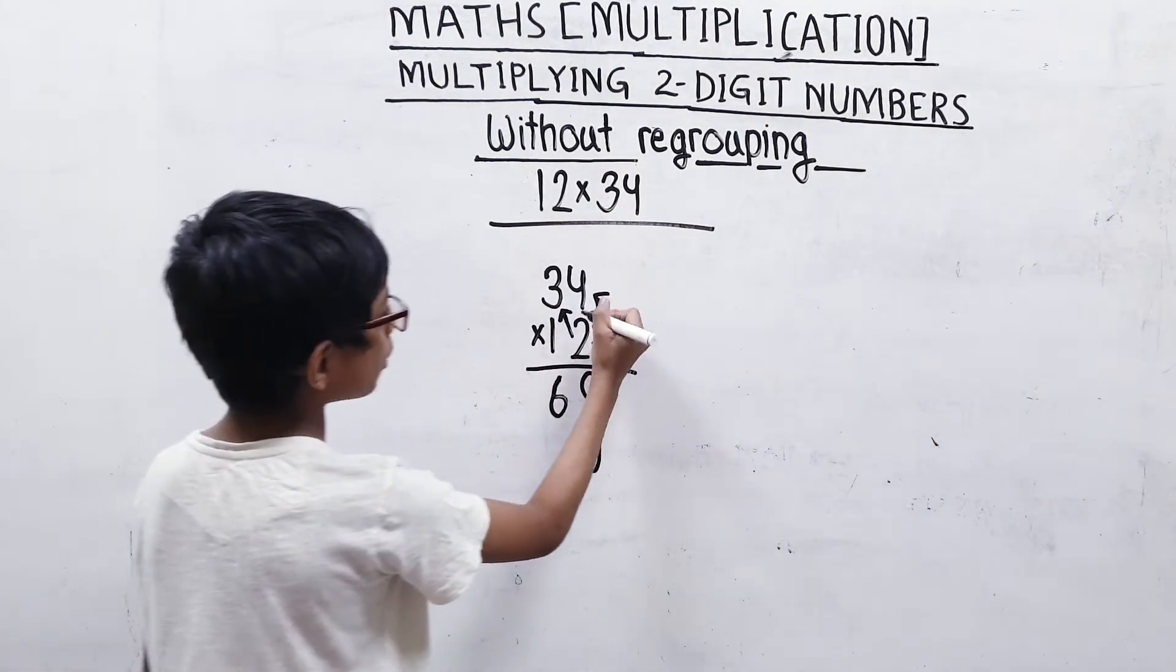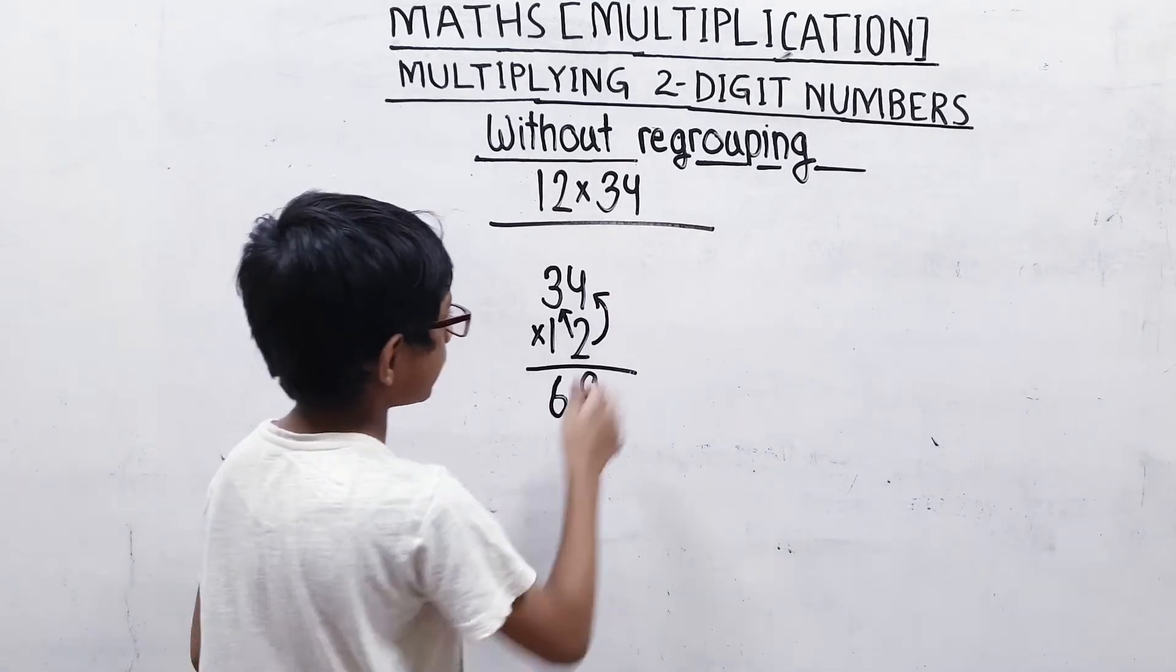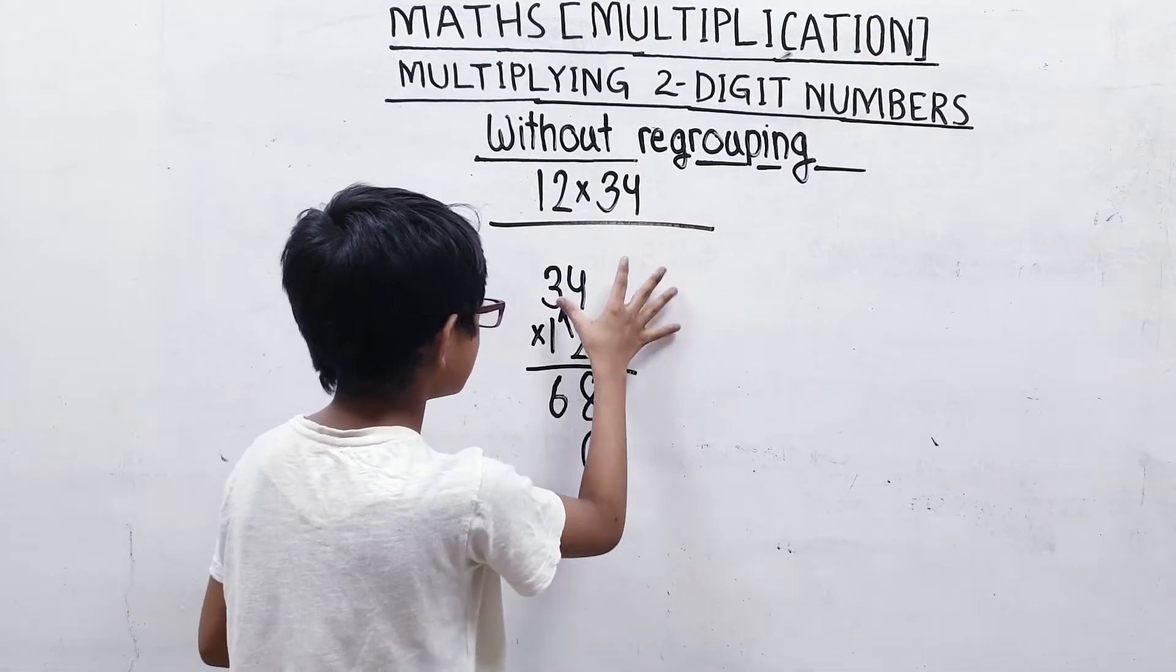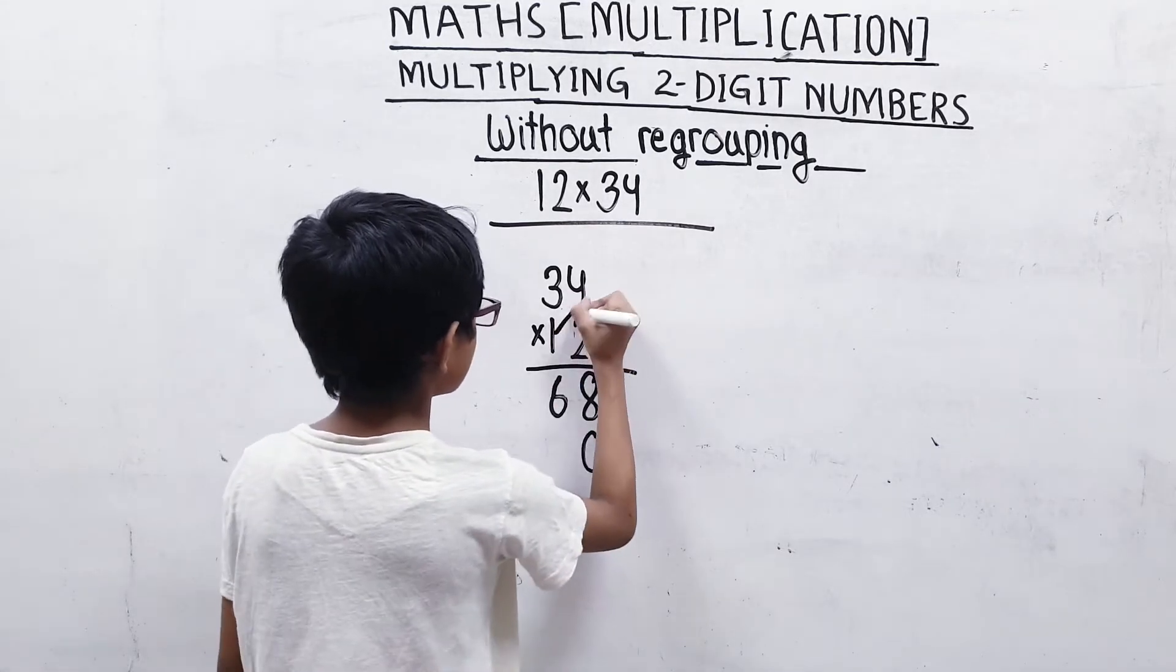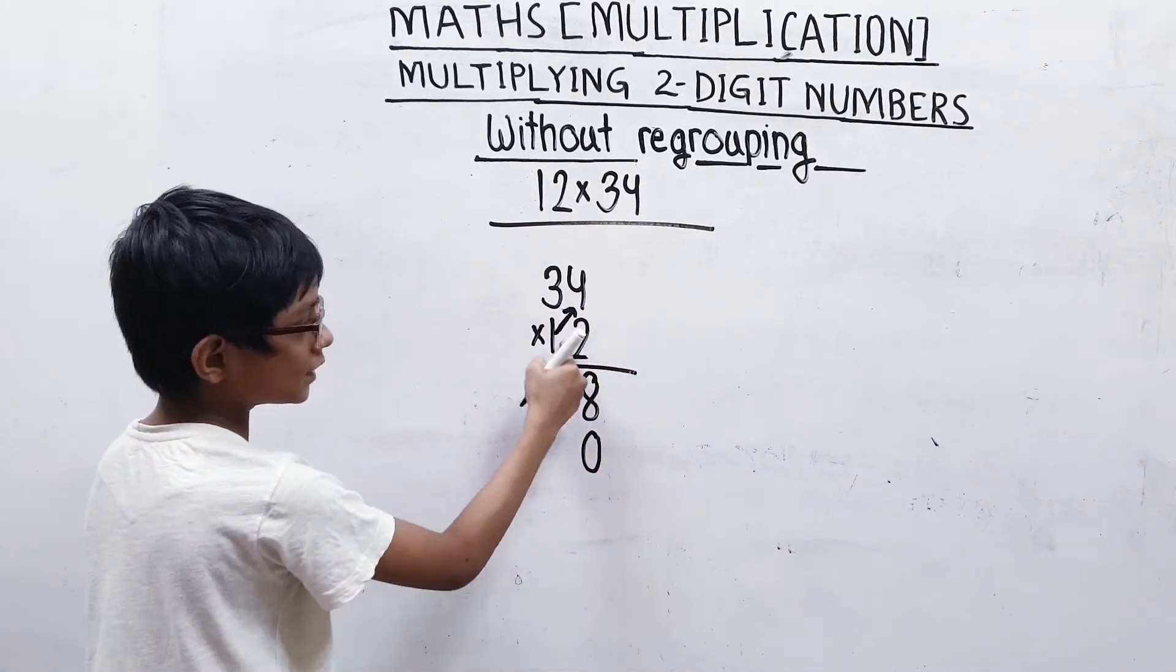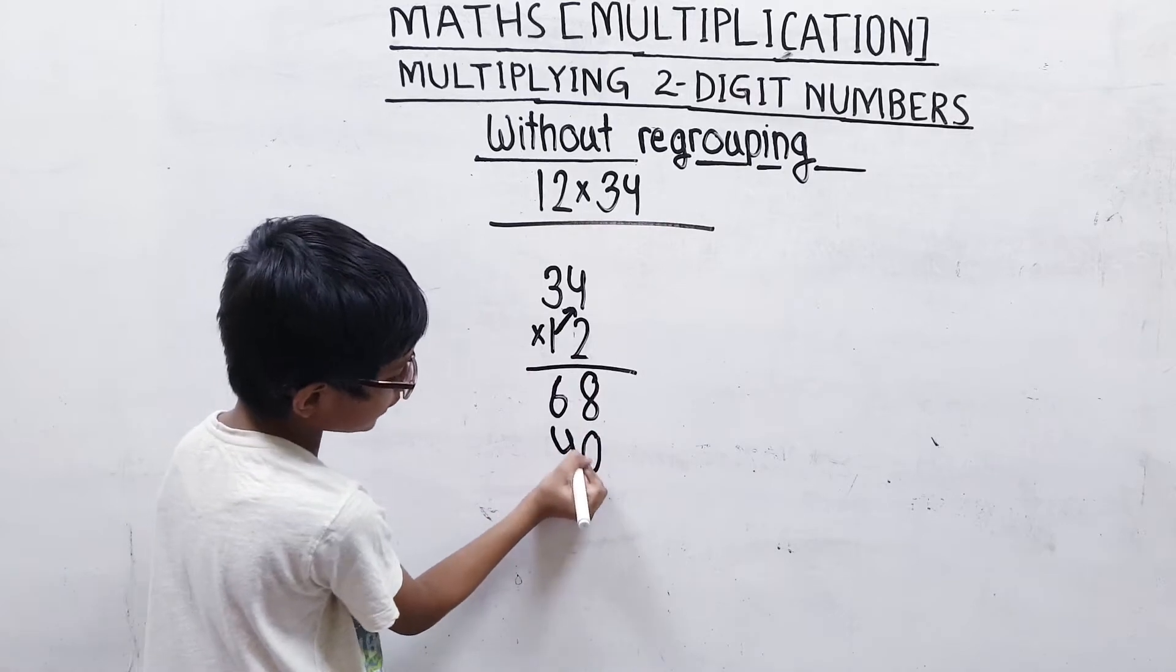Now, we will multiply 4 by 1. 4 times 1 is 4, and here we will write 4.